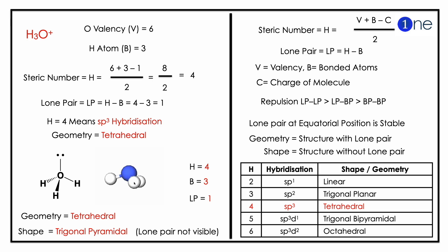To find the hybridization you should know the steric number, which is H equals V plus B minus C, whole divided by 2.